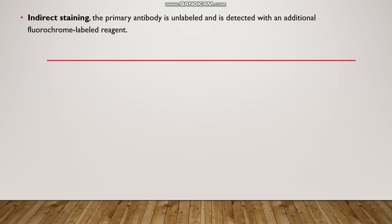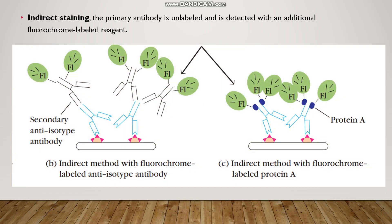In indirect staining, an unlabeled primary antibody is used and is detected with an additional fluorochrome-labeled reagent. The picture shows the cell membrane antigen bound by the primary antibody in blue. A secondary antibody, already labeled with fluorescent, is attached to the Fc region of the primary antibody. Alternatively, a labeled protein can be used instead of a secondary antibody. Fluorescent emission is detected by fluorescent microscopy.